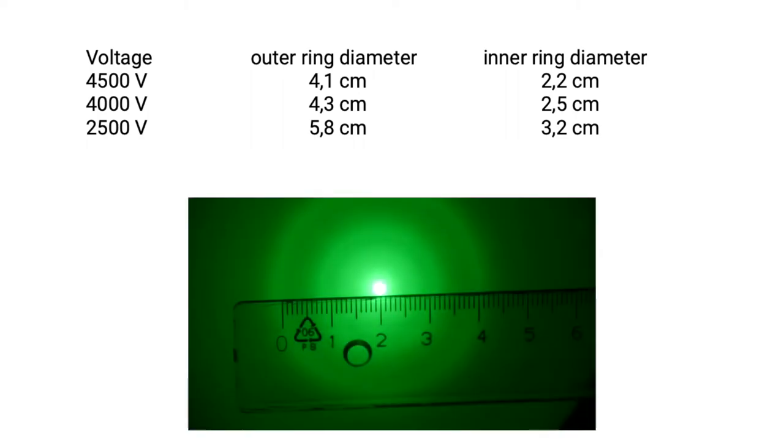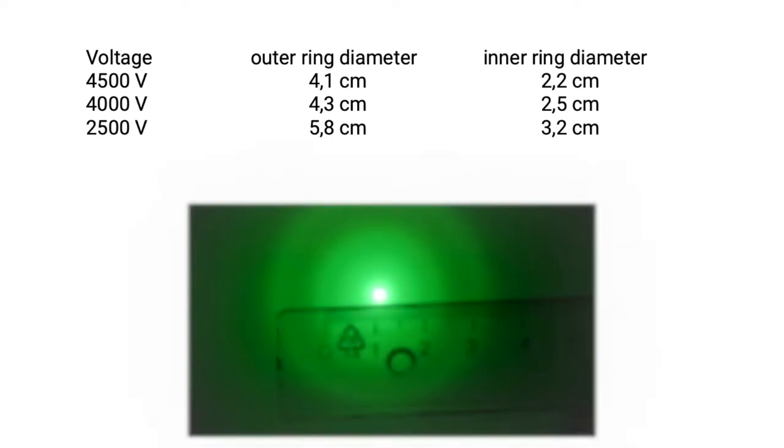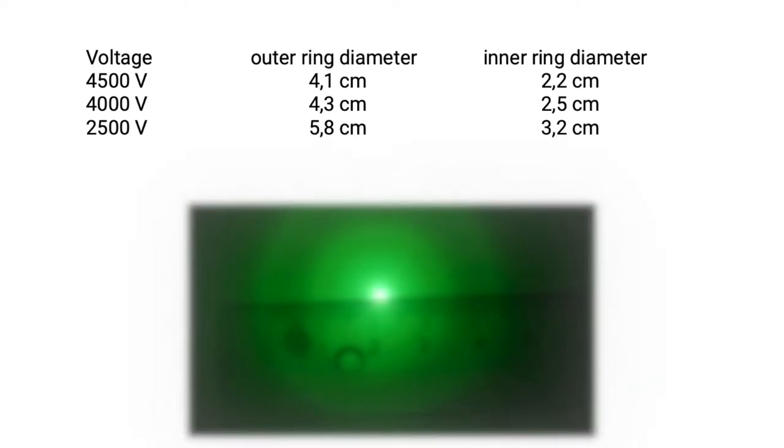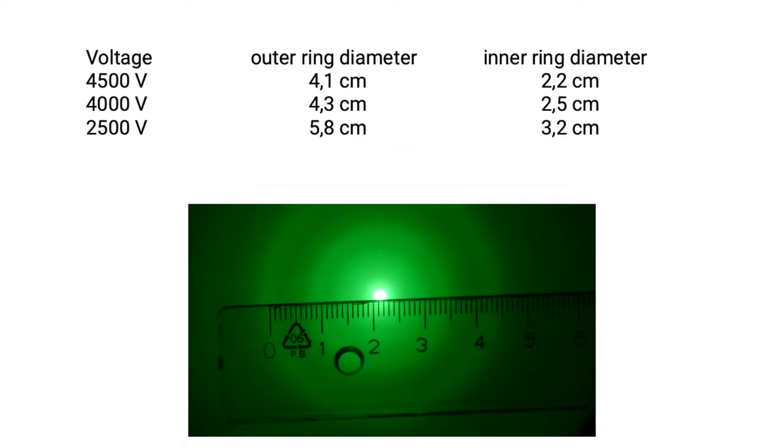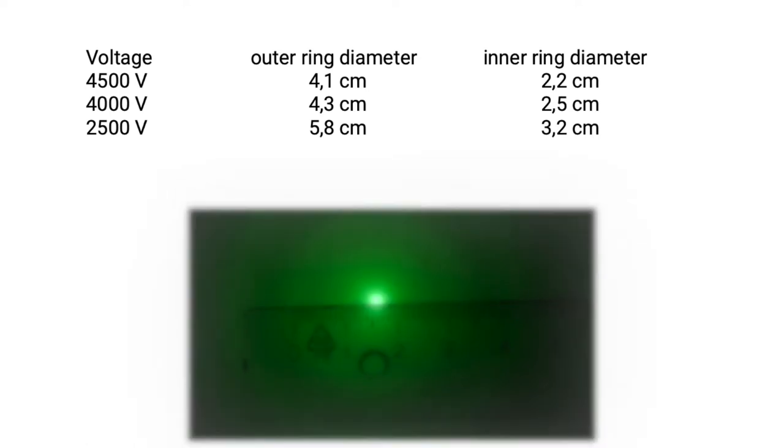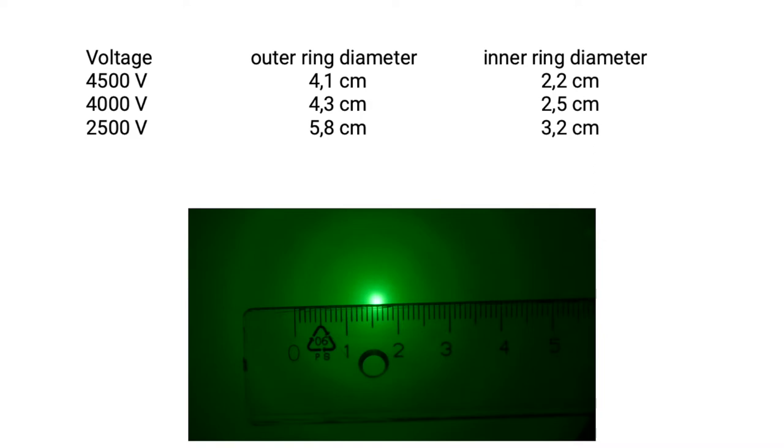At a voltage of 4500 volts, the outer diameter is 4.1 cm and the inner diameter is 2.2 cm. At a voltage of 4000 volts, the outer diameter is 4.3 cm and the inner diameter is 2.5 cm. At a voltage of 2500 V, the outer diameter is 5.8 cm and the inner diameter is 3.2 cm.